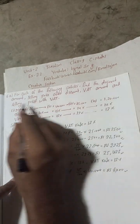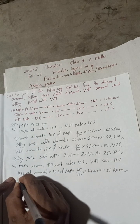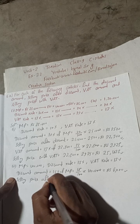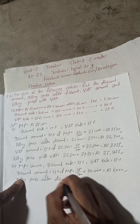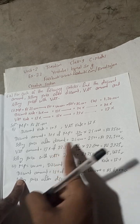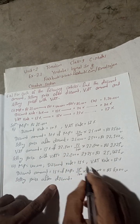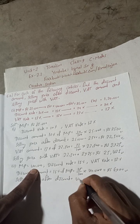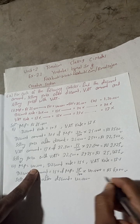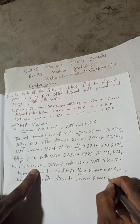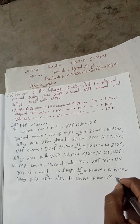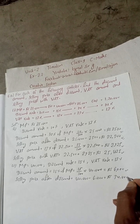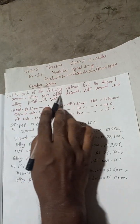Now selling price after discount. Selling price after discount equals MP minus discount amount: 40,000 minus 6,000 equals Rs 34,000. That is our selling price after discount.